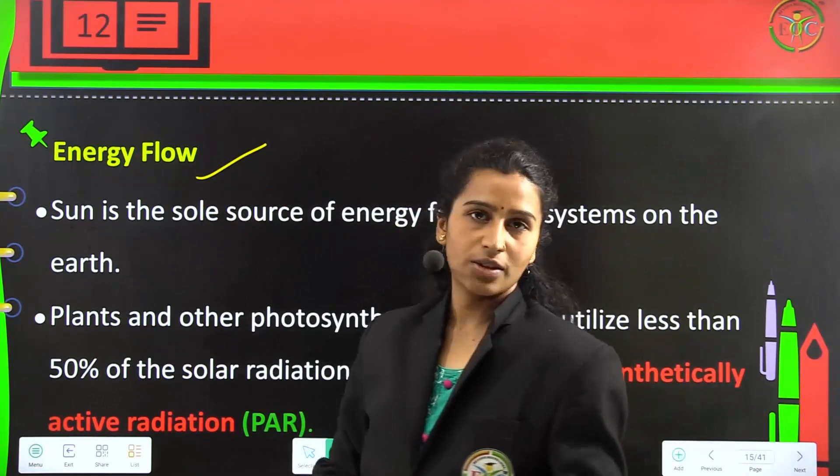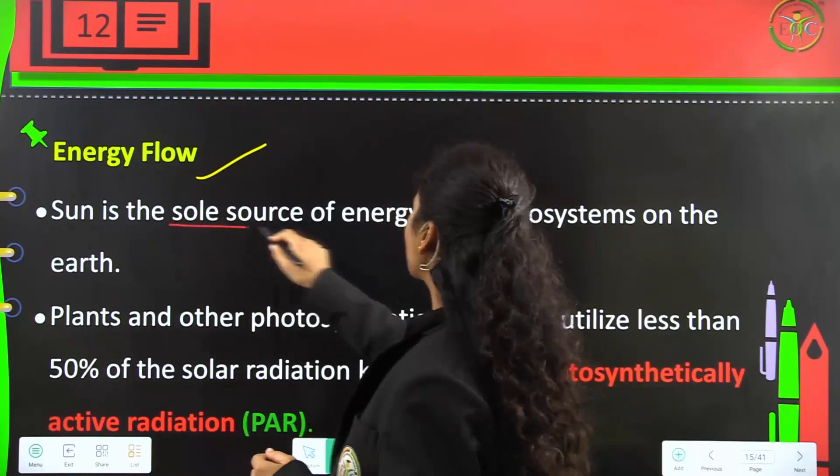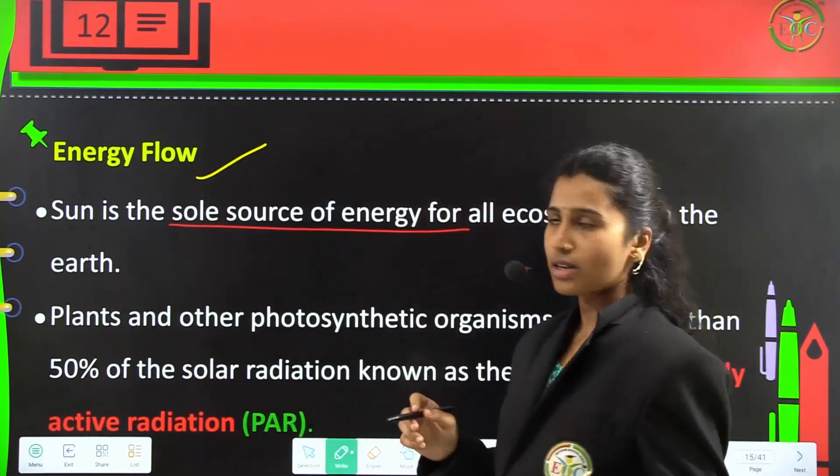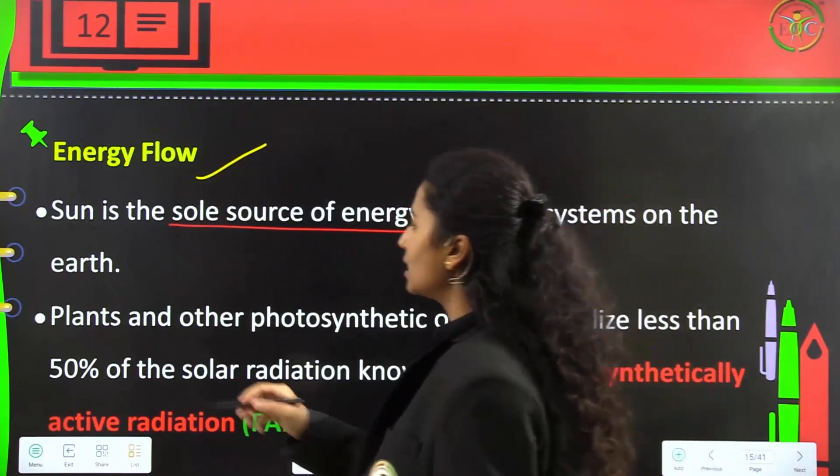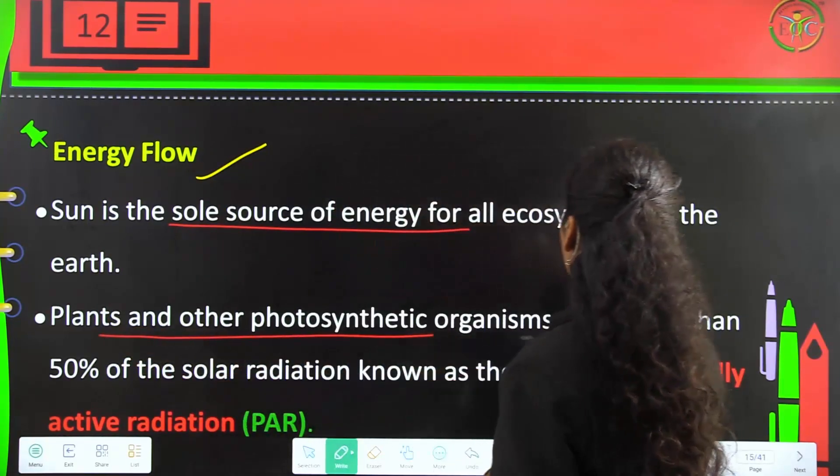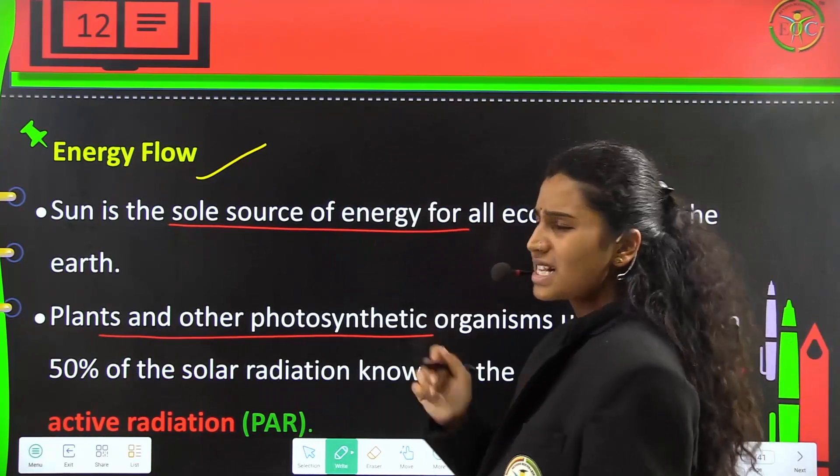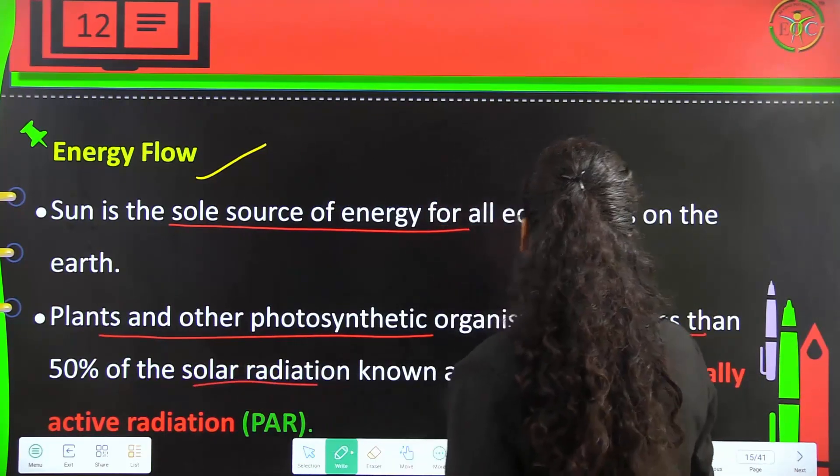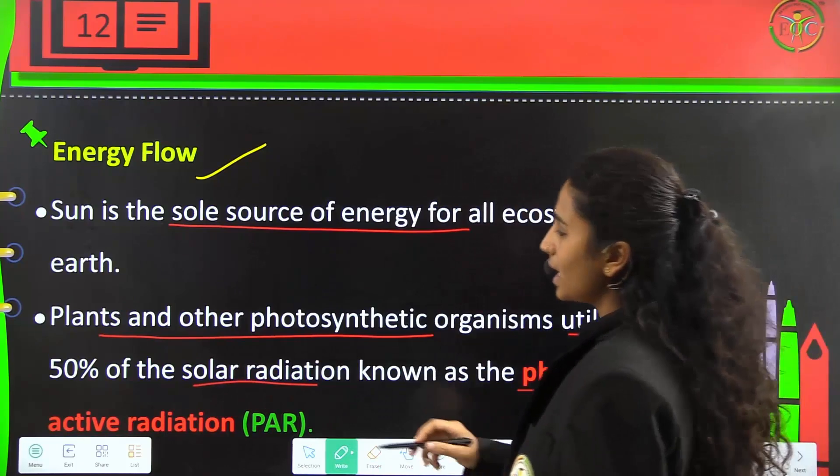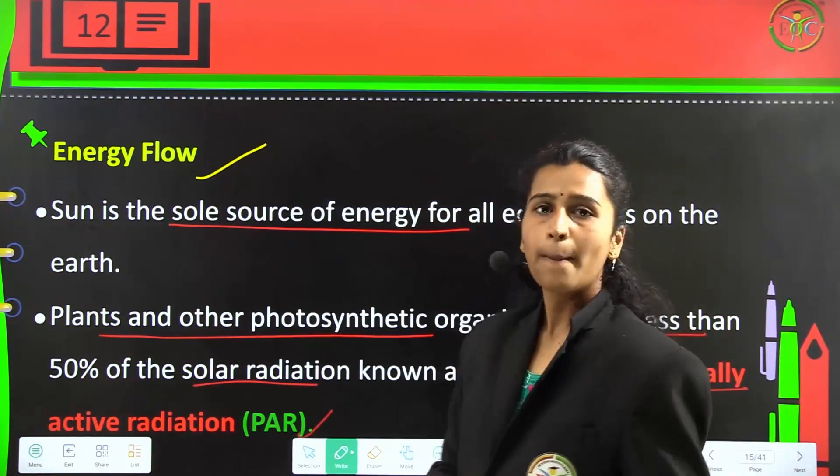Energy flow: The sun is the sole source of energy for all ecosystems existing on earth. Plants and other photosynthetic organisms utilize less than 50 percent of solar radiation, called photosynthetically active radiation (PAR).